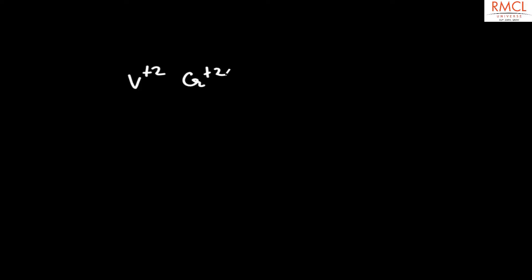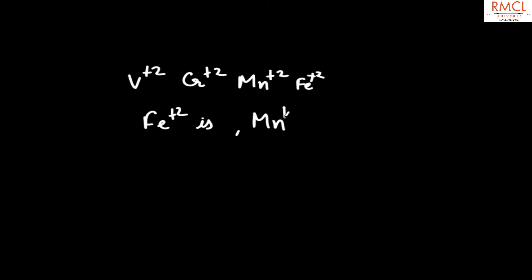The number of unpaired electrons in Fe²⁺ is less than in Mn²⁺, because Mn²⁺ has a greater number of unpaired electrons compared to Fe²⁺. That is why this option is incorrect.